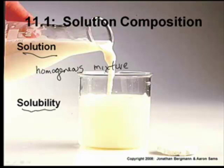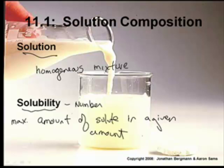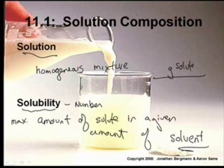Solubility is a little bit different. It's a mathematical term - that's how we measure the extent to which something dissolves. So it's a number. It's basically the maximum amount of solute in a given amount of solvent. Typically, it's given in grams of solute per 100 grams of solvent.